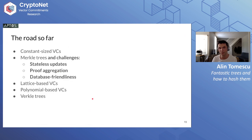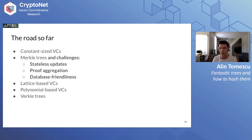But Merkle trees are not perfect — they present several challenges. I want to talk about three: the lack of stateless updates (which Chris's talk touched upon), the lack of efficient proof aggregation, and the lack of database friendliness when you actually want to store Merkle trees on disk, as is the case in many cryptocurrencies like Ethereum.